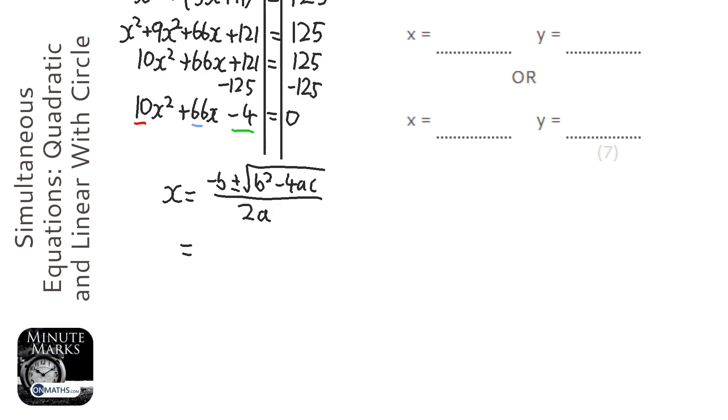66 squared minus 4 times 10 times minus 4. Then click the down button, 2 times 10. And I'm just going to press equals.